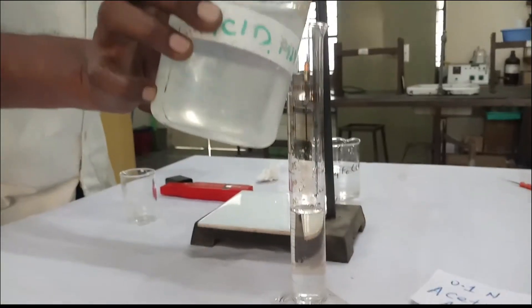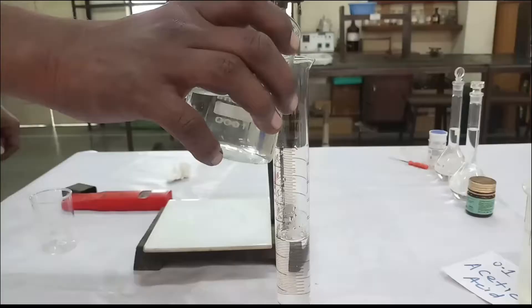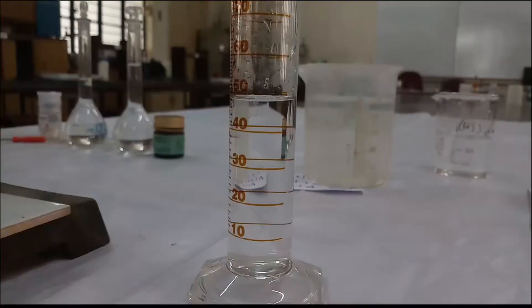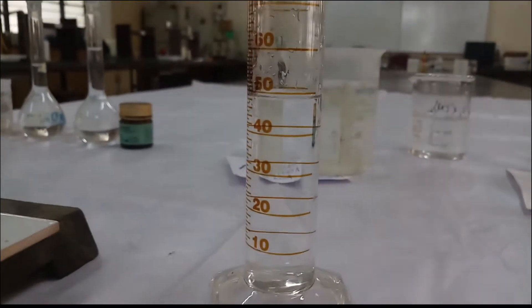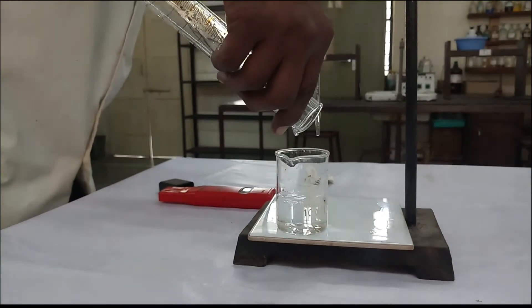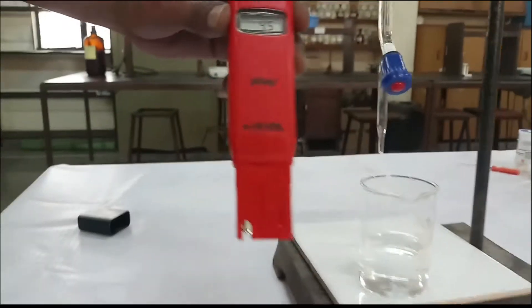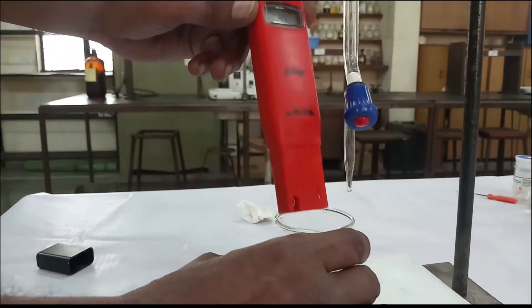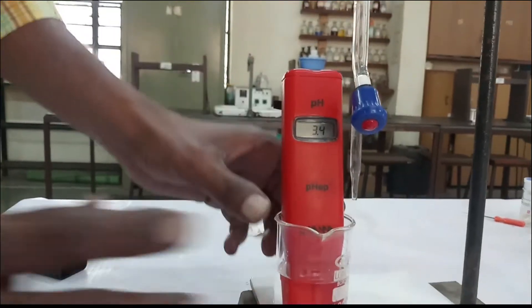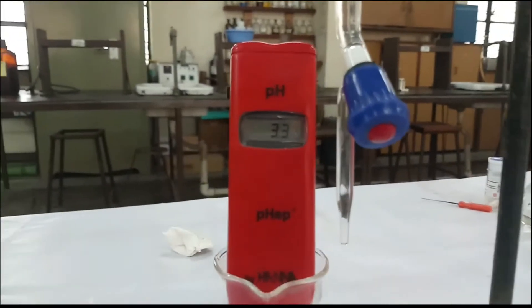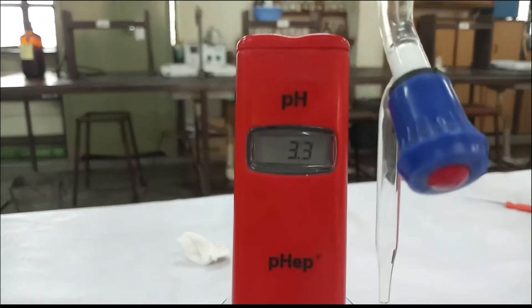Take 10 ml of acetic acid and 40 ml distilled water with the help of a measuring cylinder. Transfer this mixture into a 100 ml beaker. Dip the calibrated pH meter into this beaker and note down the pH. In this case, it is 3.3 for the 0 ml addition of NaOH.